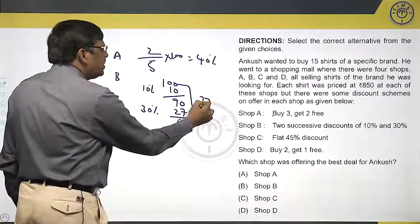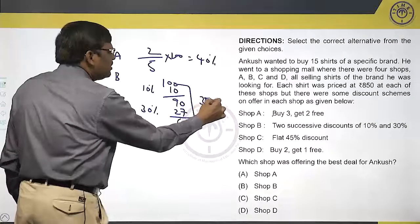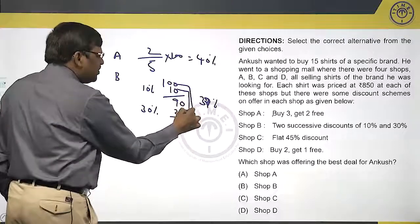Next he is getting 30% discount on, not 100, on 90. 30% on 90 is 27.